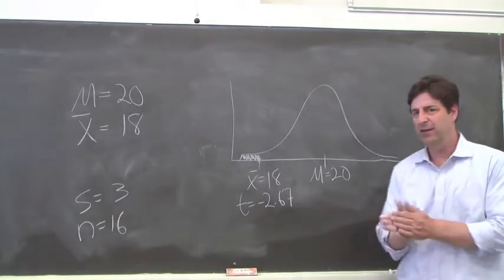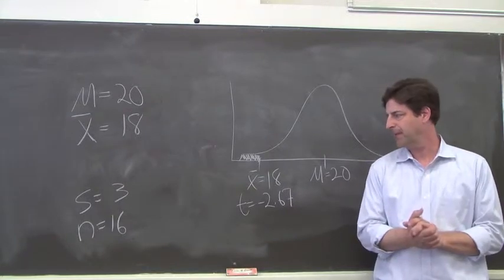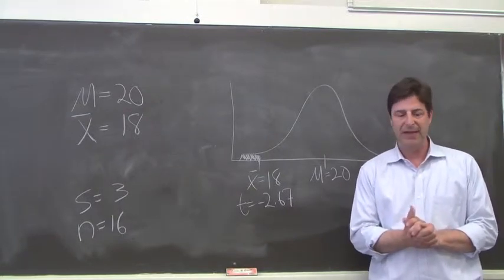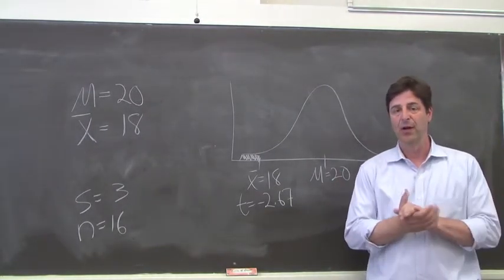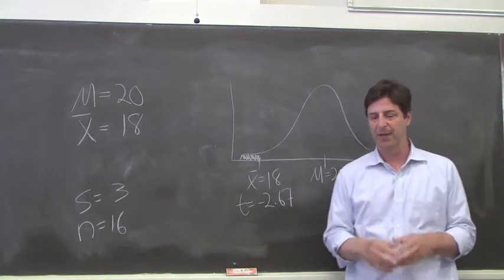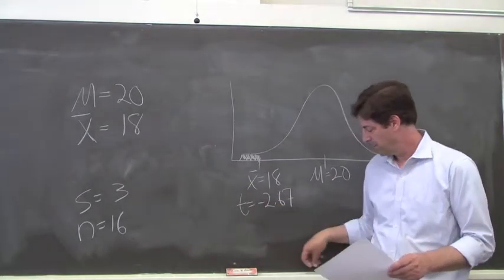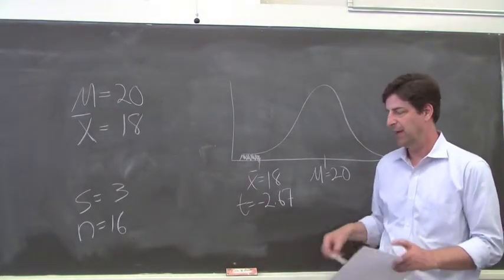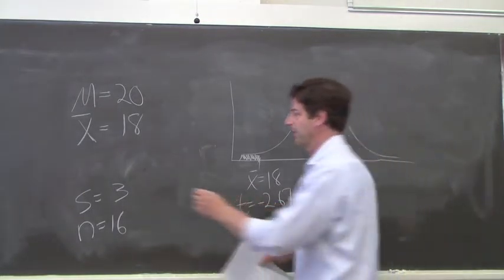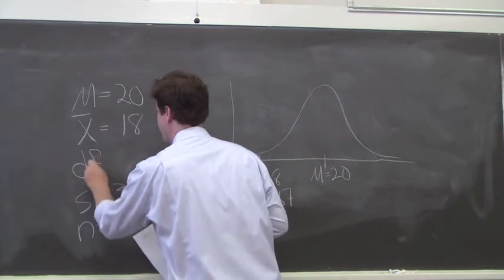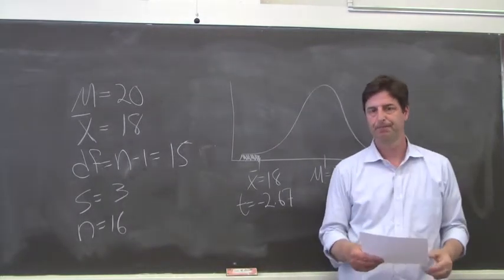There's not really a precise way to do that in Appendix B. In Appendix A, you can find the exact proportion of the normal distribution for every z-score, but it's a little bit rougher in Appendix B. First, you've got to figure out your degrees of freedom. In this case, we have one sample, our n is 16, so our degrees of freedom is n minus 1 equals 15.